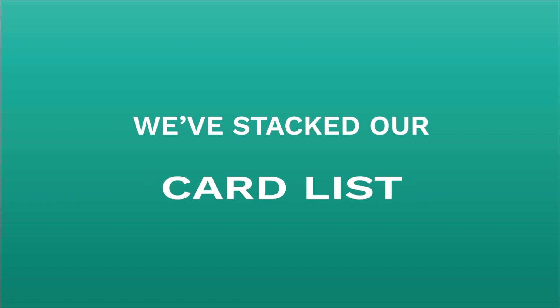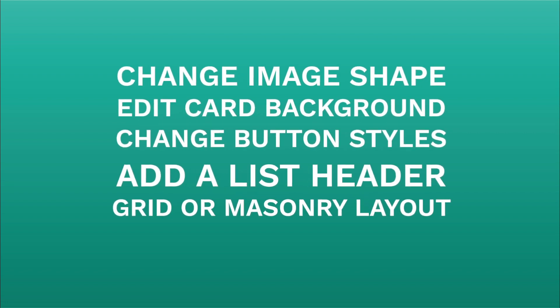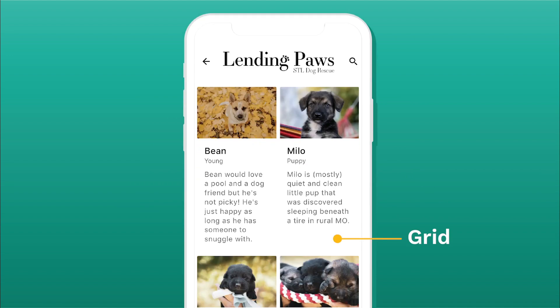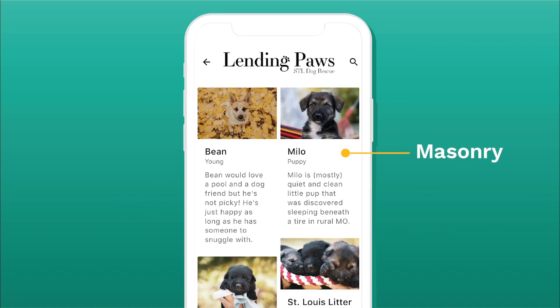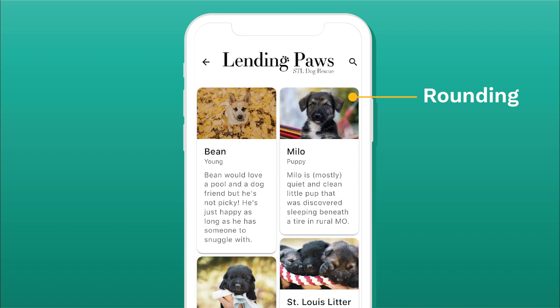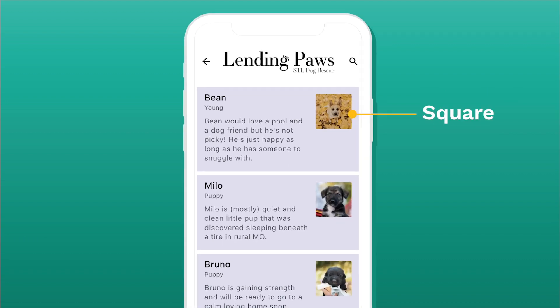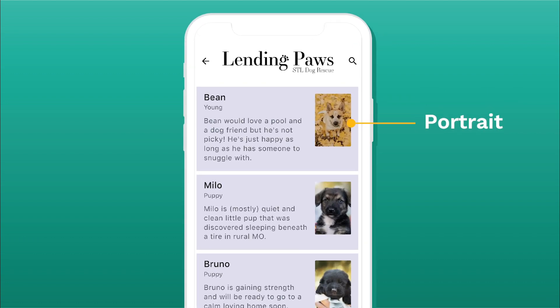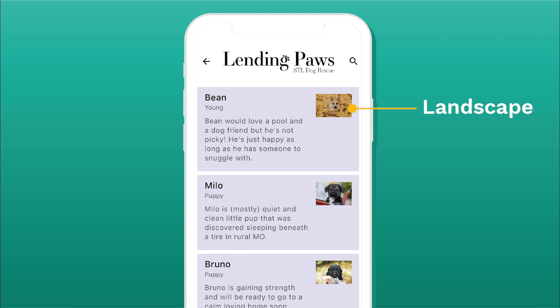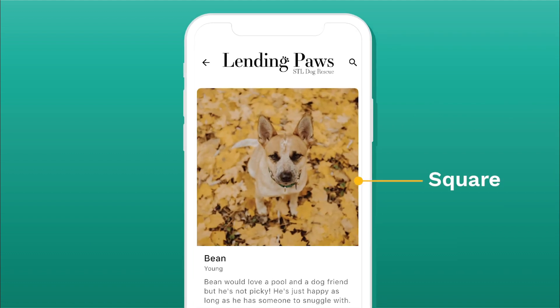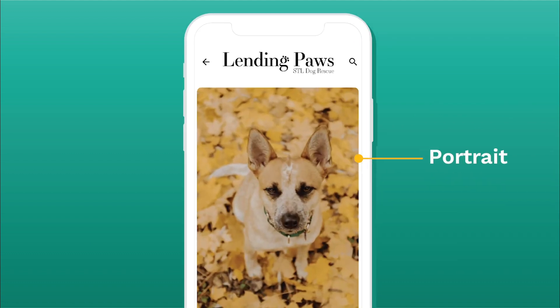We've also stacked up our card list, added a ton of ways you can change image shapes, card backgrounds, buttons, and lots of cool things. You can do a grid option as well as a masonry option on that list. You can change the rounding of the card, change it from square to portrait to landscape photos. That works both on the right side of the photo as well as when you do one column, and you can change all of the sizes there as well.